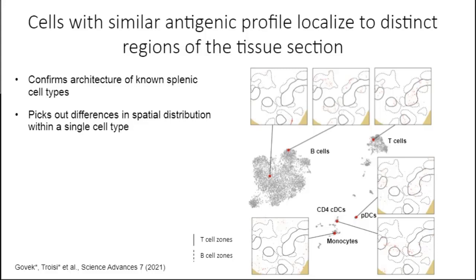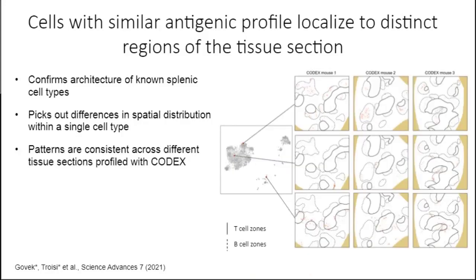For instance, two different regions in the B-cell gene expression space correspond to B cells that localize in different regions within the B-cell zones. We can evaluate whether these localization patterns are consistent across different spleens — different replicates. Using the same CITE-seq atlas to annotate three different spleens, we observe essentially the same localization patterns for each region in each of the three spleens, validating that these patterns of localization are real.